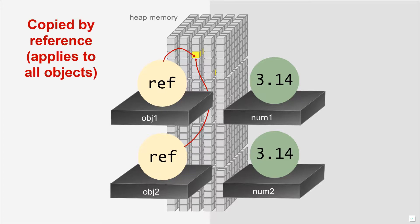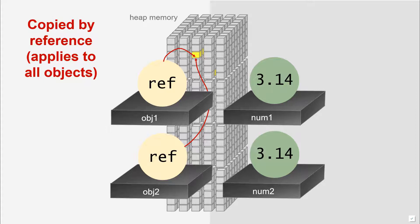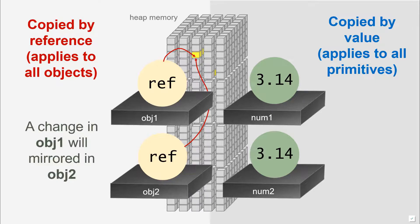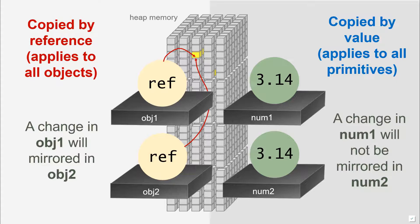So let us summarize. If we are copying objects, we are copying by reference — visualize references pointing to the same location in heap memory in the background. Whereas when we copy things by value, we are generating new primitive values and placing them on top of each variable location. There are important implications: if we make a change to object1, it would be reflected directly in object2, because we are changing what happens in memory and the second object references the same thing. Whereas if we change num1, the change would not be mirrored in num2 — the primitives are completely separate from one another.